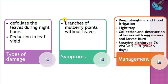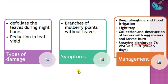For these defoliators, the damage symptom is obviously defoliation of leaves during night hours — in the morning you can see the symptom and reduction in leaf yield. Branches of mulberry plants without leaves will be seen. Management practices: they pupate in soil, so deep ploughing and flood irrigation should be done. Light traps attract adults. Collection and destruction of egg masses is done. Ultimately, if needed, we apply chemicals.